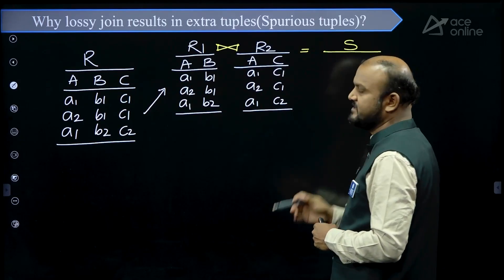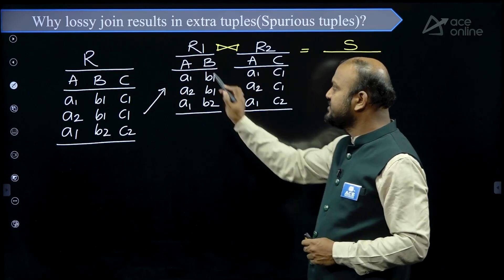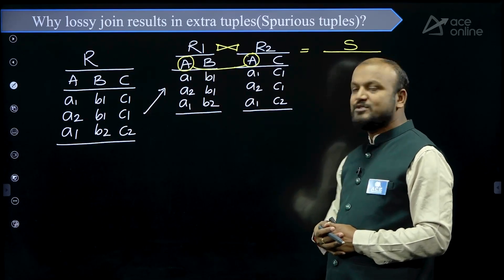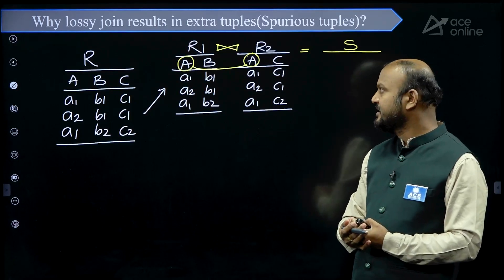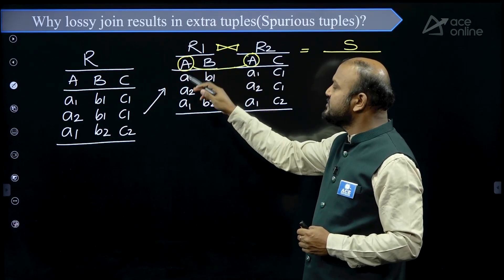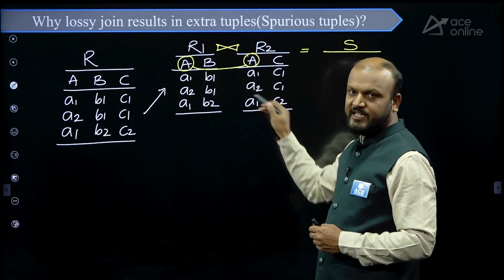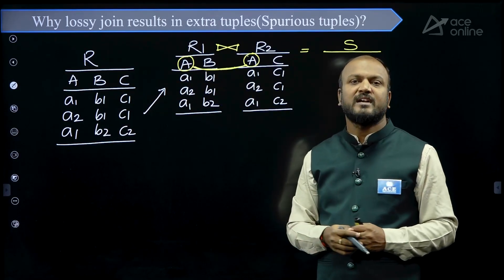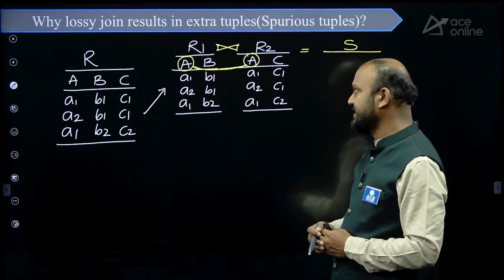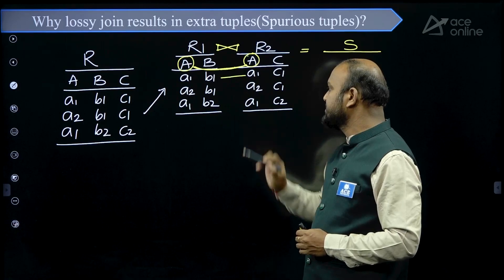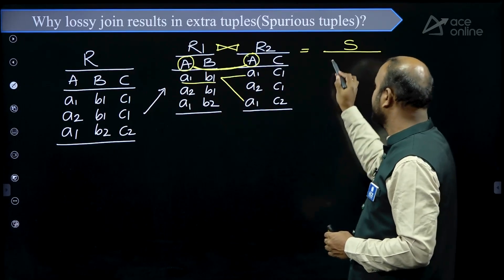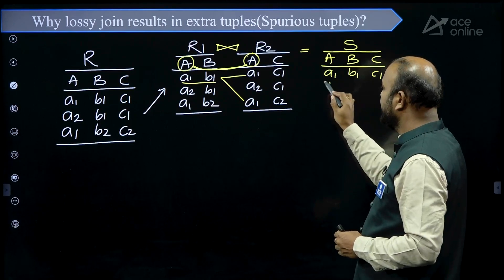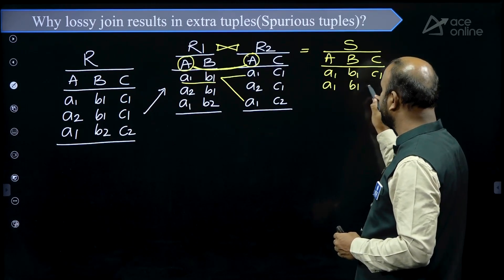The join between the two tables I am calling S. How to perform a join? Join is always with respect to some common attribute and the condition is equality. Join is essentially a cross product. The cross product of R1 and R2 contains 3 × 3 = 9 tuples. In those 9 tuples, the tuples satisfying the condition R1.A = R2.A will be in the output. A1 = A1 is true, so for the first tuple we get the combination A1, B1, C1 and also A1, B1, C2.